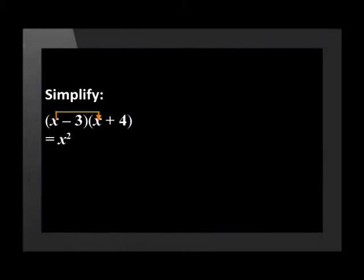We multiply x and x as these are the first terms in each bracket. This comes to x squared. Let's multiply the outer terms, x and plus 4 together, to get an answer of 4x. The inner terms are minus 3 and x. Multiplying these two together equals minus 3x. And then the last terms, which are minus 3 and positive 4, will give us an answer of minus 12.